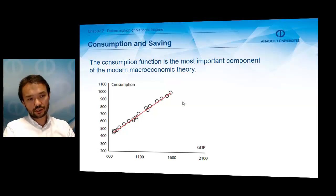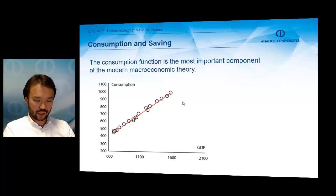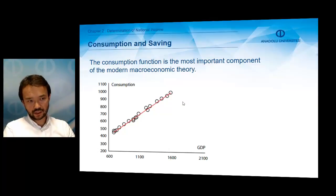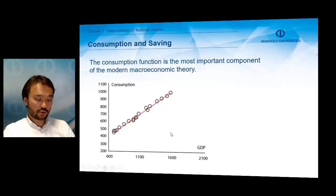We assume that income is either consumed or saved. So when we understand consumption, we can also say something about savings, and vice versa. We consume part of our income or we save part of our income. This relationship affects our determination of national income. Here we can see the relation between consumption and gross domestic product, and consumption is determined by income.